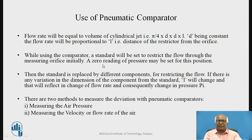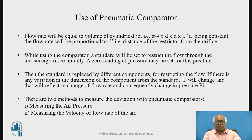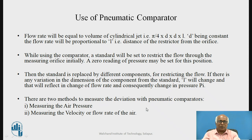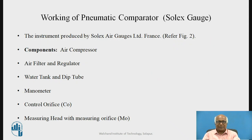While using the comparator, initially a standard will be set to restrict the flow through the measuring orifice, and a zero reading of pressure is set for this position with the standard component. Then the standard is replaced by different components for restricting the flow. If there is any variation in the dimension of the component from the standard, L will change — if the component is of larger diameter, L will decrease; if smaller, L will increase — resulting in a change in flow rate and consequently a change in pressure. There are two methods to measure the deviation: one is by measuring the air pressure, another is by measuring the velocity or flow rate of air, with the principle remaining the same.